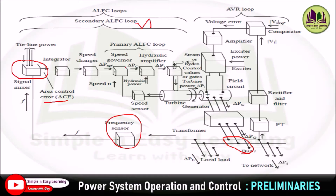The secondary ALFC loop is a very slow process. Since the frequency is sensed, compared, and sent to the speed changer, this loop is insensitive to rapid load and frequency changes. Instead, it focuses on drift-like changes that take place over a period of minutes. Using both the primary and secondary ALFC loops, speed is controlled, which in turn controls the frequency of the system, since speed is directly proportional to frequency. This variation of speed results in variation of real power.